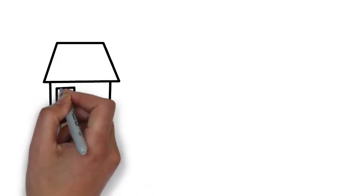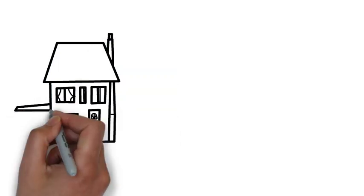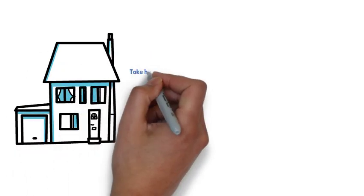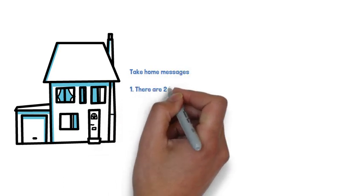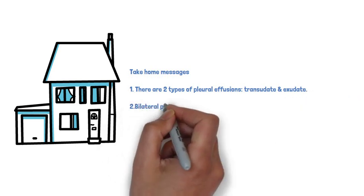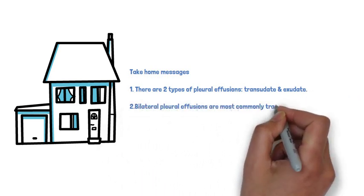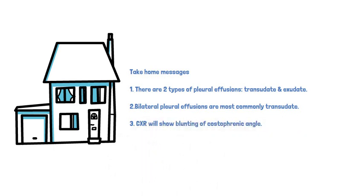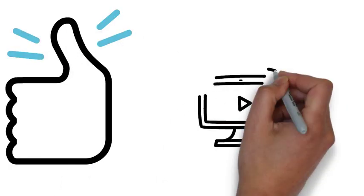Now, that concludes today's talk. I'm just going to go over the take-home messages of today. So there are two types of pleural effusions, transudate and exudate. Bilateral pleural effusions are more commonly transudate. And a chest x-ray will show blunting of the costophrenic angle in pleural effusions. I hope you enjoyed this video. Don't forget to give it a big thumbs up and subscribe to the channel so you don't miss out on any more video updates.